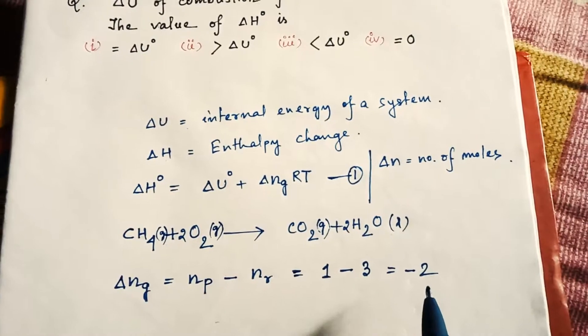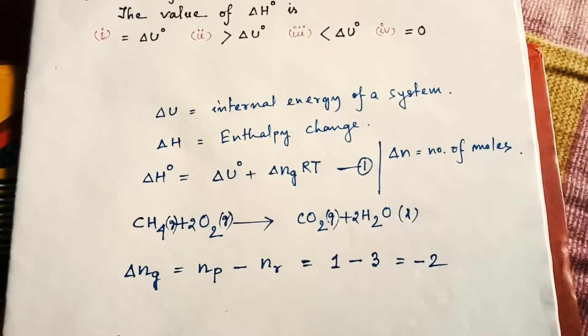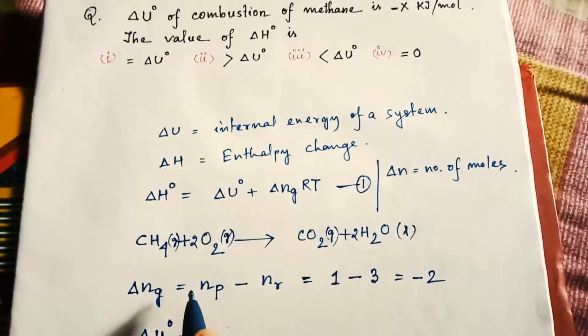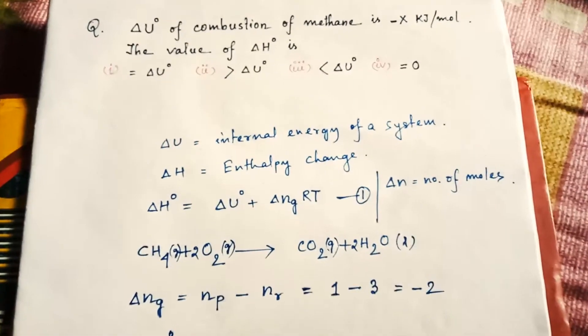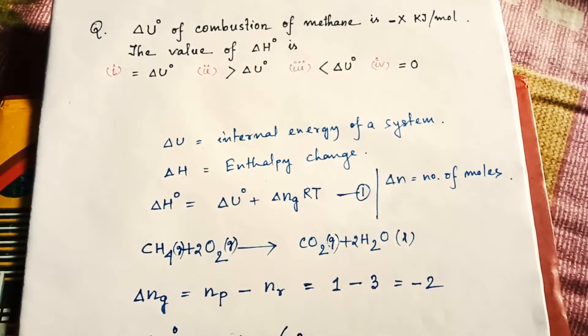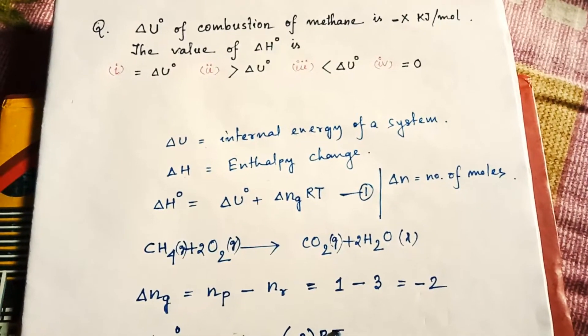So put all this value here. ΔH° = -X + (-2)RT, equal to -X - 2RT.